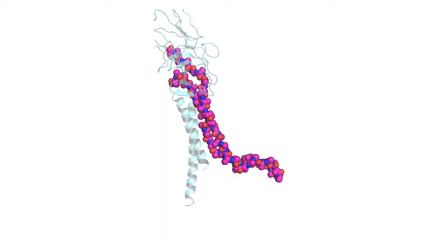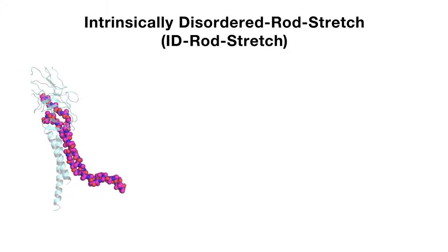The team named this peptide ID Rod Stretch, since it was conserved in length in the rod protein, but varied in the hook protein.